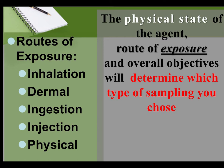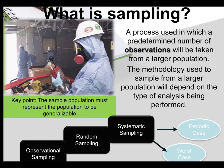We remember there are different routes of exposure for which a dose is assumed. We can have inhalation, dermal exposure, ingestion, injection, and then that physical route of exposure. The physical state of the agent or substance, the route of exposure, and the overall objectives — why we need to sample — will determine which type of sampling plan that you choose.